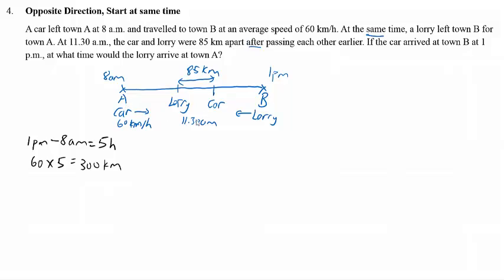At 11:30 AM, we know that the car is at this point. So we take 11:30 AM minus 8 AM to find the time taken for the car to travel from A to that point. We get a total of 3 hours 30 minutes, which is 3.5 hours. That means the car takes 3.5 hours, and the distance is the speed of the car — 60 times 3.5 — giving a total of 210 km.